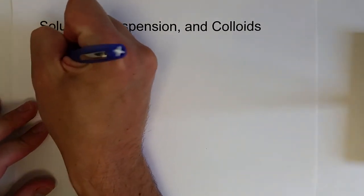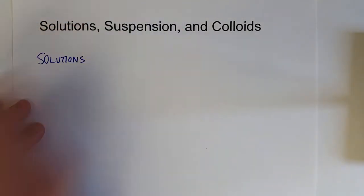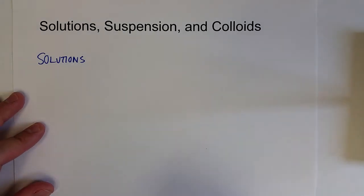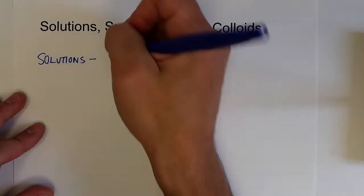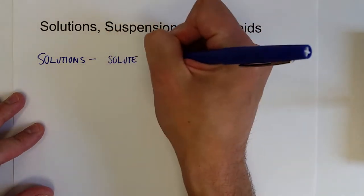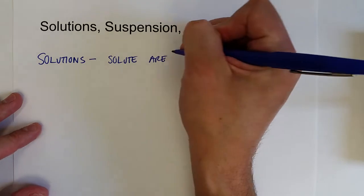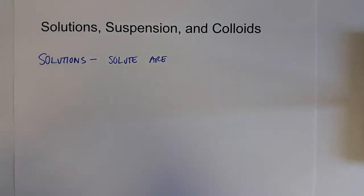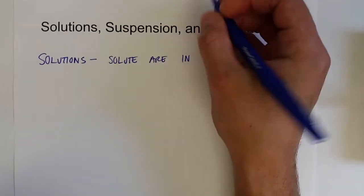Alright, so we've been talking about solutions so far, and we said those are any homogeneous mixture, but a true solution, as it's often called, is because the solute are individual atoms, ions, or molecules.